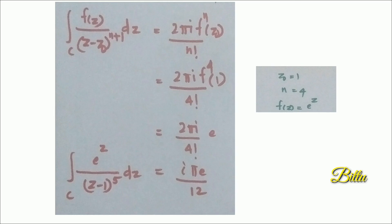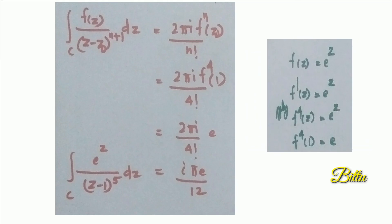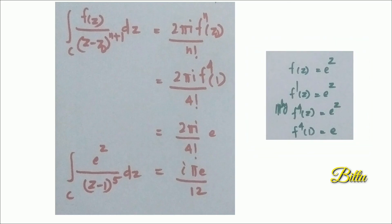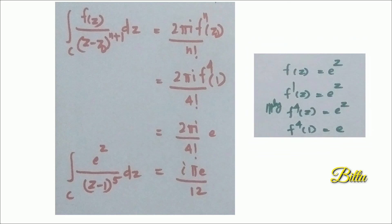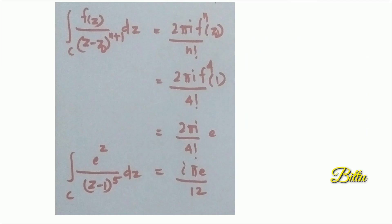The function is e^z, whose derivative is always e^z, so its fourth derivative is also e^z. Therefore f⁴(1) = e. Replacing: 2πi divided by 4 factorial times e = 2πie/24 = iπe/12. The answer of the given integral is iπe/12.